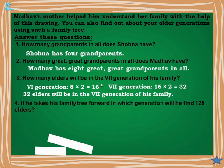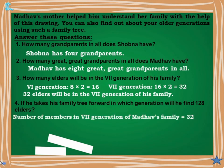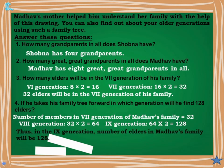Question 4: If he takes his family tree forward, in which generation will he find 128 elders? Starting from the 7th generation with 32: 8th generation = 32 × 2 = 64. 9th generation = 64 × 2 = 128. Answer: in the 9th generation, the number of elders in Madhu's family will be 128.